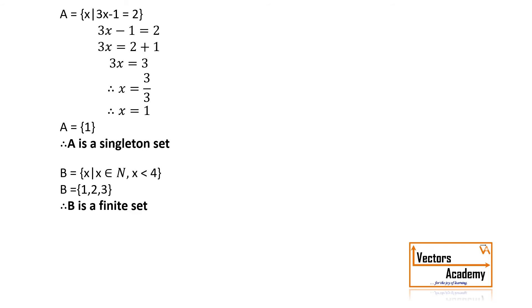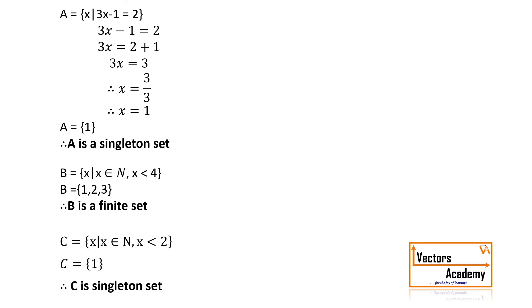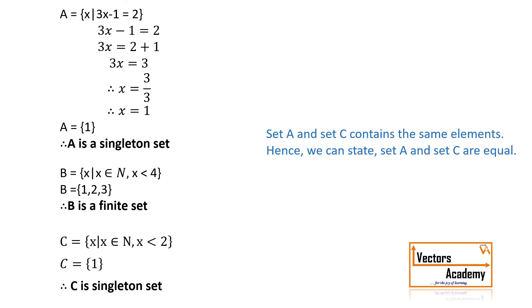Next, set C contains x such that x belongs to natural numbers and x is less than 2. There is just one natural number less than 2, which is 1 itself, hence C contains just 1 — it is a singleton set. If you look carefully at set A and set C, they both contain the same element: 1. Hence both these sets are called equal sets. Sets which contain the same elements are called equal sets.